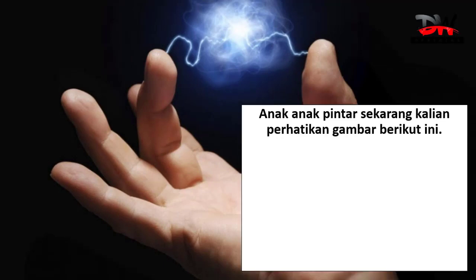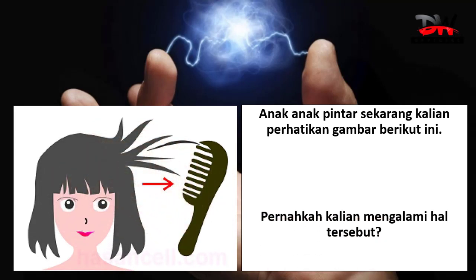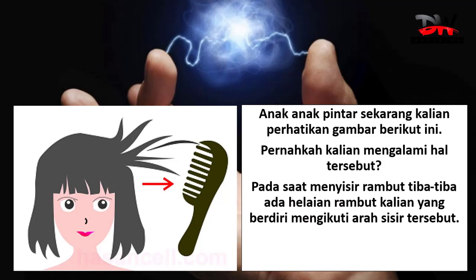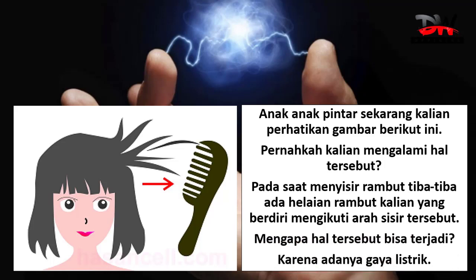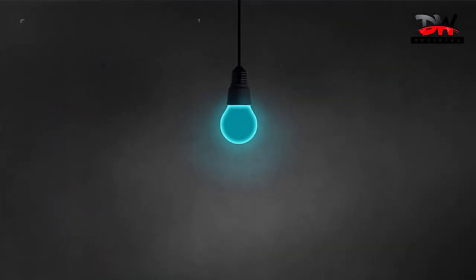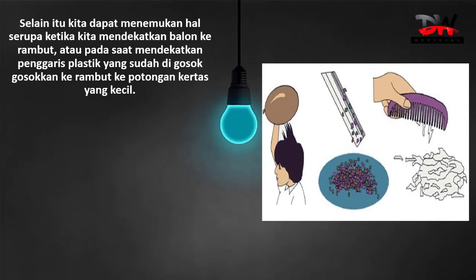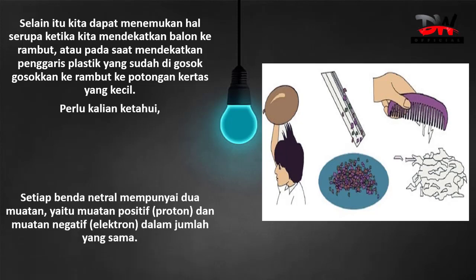Anak-anak pintar, sekarang kalian perhatikan gambar berikut ini. Pernahkah kalian mengalami hal tersebut? Pada saat menyisir rambut, tiba-tiba ada helian rambut kalian yang berdiri mengikuti arah sisir tersebut. Mengapa hal tersebut bisa terjadi? Karena adanya gaya listrik. Selain itu, kita dapat menemukan hal serupa ketika mendekatkan balon ke rambut, atau pada saat mendekatkan penggaris plastik yang sudah digosok-gosokkan ke potongan kertas yang kecil. Perlu kalian ketahui, setiap benda netral mempunyai dua muatan, yaitu muatan positif yang disebut proton, dan muatan negatif yang disebut elektron, dalam jumlah yang sama.